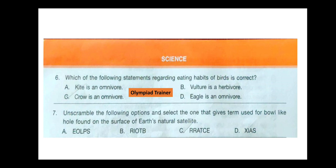The next section is Science. Question 6. Which of the following statements regarding eating habits of birds is correct? Option A: Kite is an omnivore. Option B: Vulture is a herbivore. Option C: Crow is an omnivore. Option D: Eagle is an omnivore. The correct answer is option C — Crow is an omnivore.